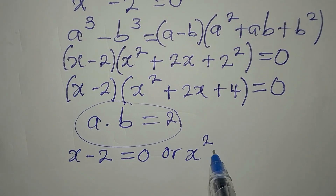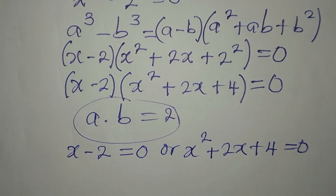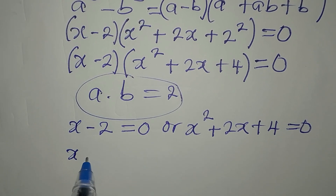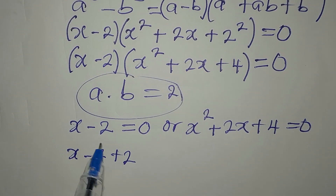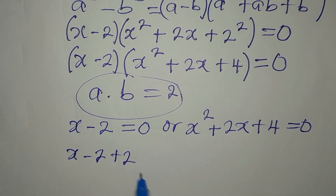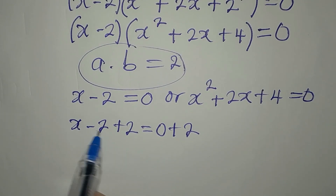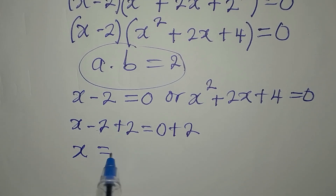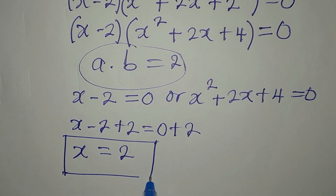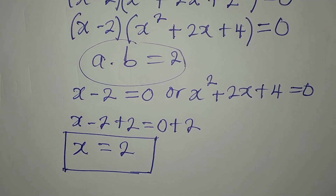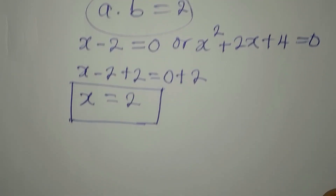So we say x minus 2 equals 0, or x squared plus 2x plus 4 equals 0. Solving the first equation: add 2 to both sides to get the additive inverse of minus 2, so x equals 2. This is what we would have gotten using the shorter method, which gives only one solution.